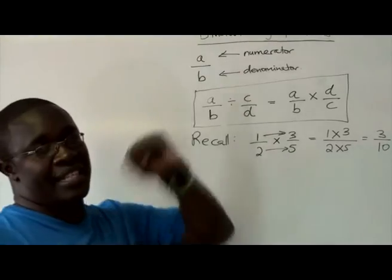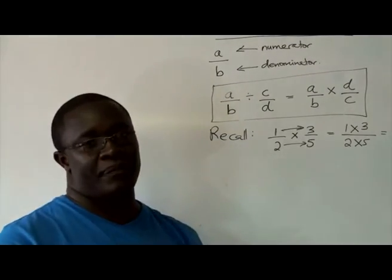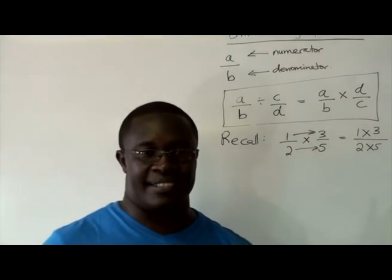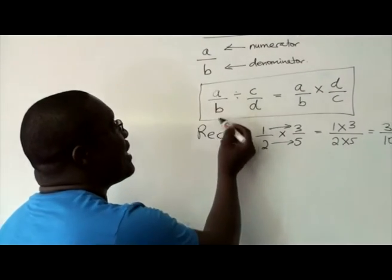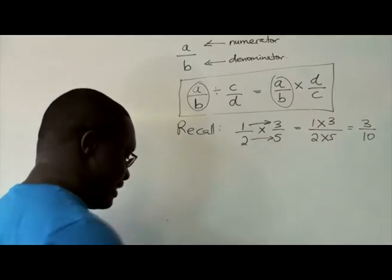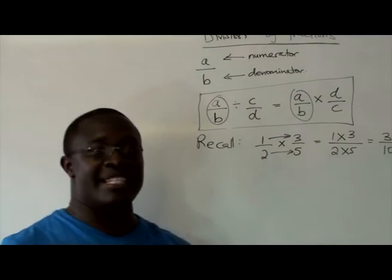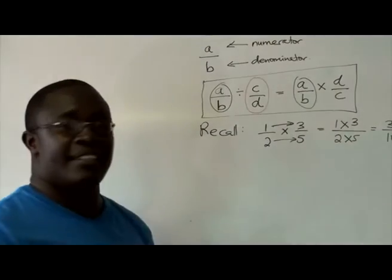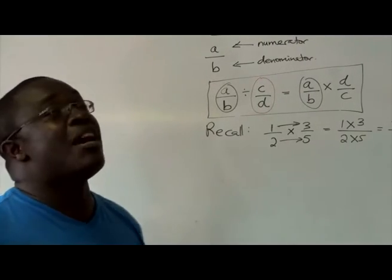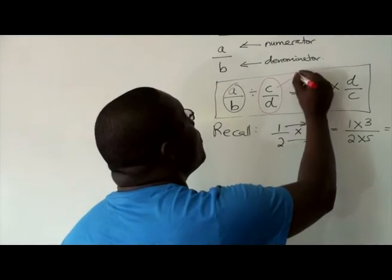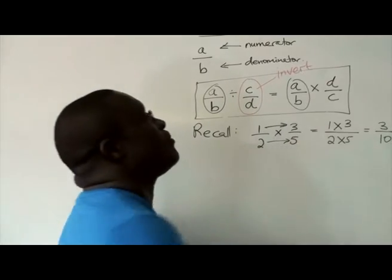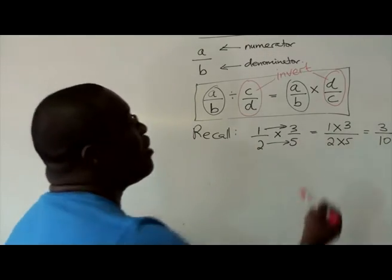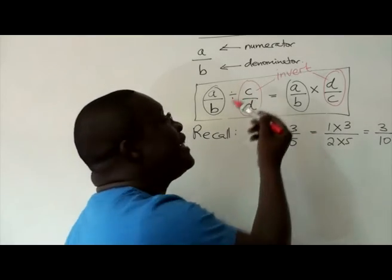Now let's go back to division and say, how do we use this information? The basic principle is that when you're dividing two fractions, you keep the first as is, as you have seen here — it has stayed the same. A over B remains as A over B. But the second fraction, it was C over D, but now we've inverted it. It's called to invert. We've inverted it and now it's become D over C. So D over C is actually the reciprocal of C over D.